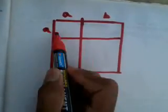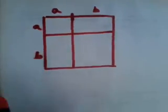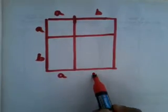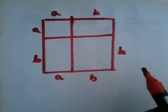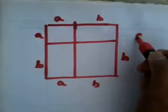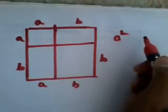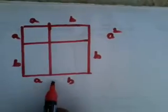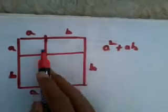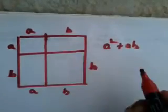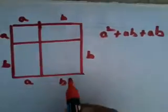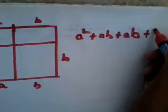This will be a, this is equal to b, and this is a, this is equal to b, and this is also b. Then the area of this square is equal to a square, and the area of this is equal to ab, and the area of this will be plus ab.